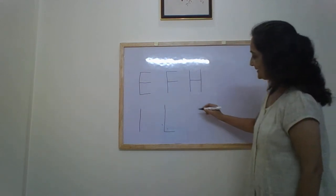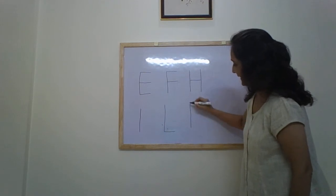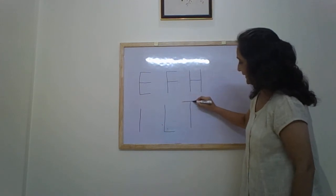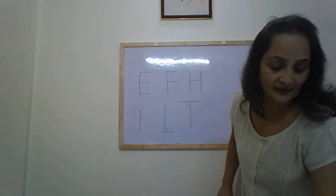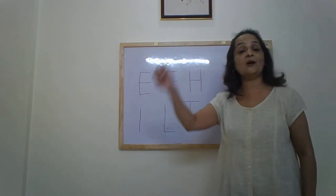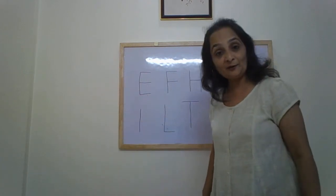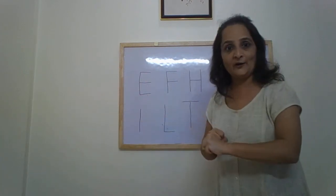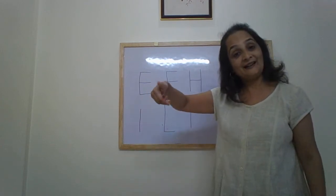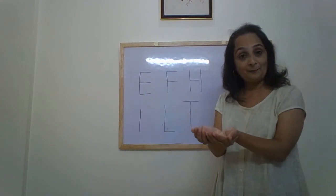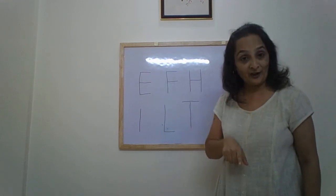Next is letter T. Standing line, sleeping line on top — letter T. T makes the sound T. T for tiger, table, tub, tiffin.